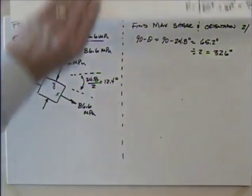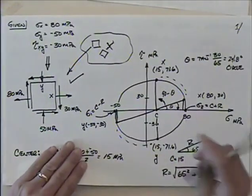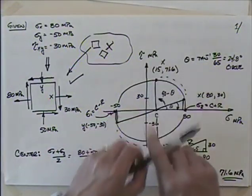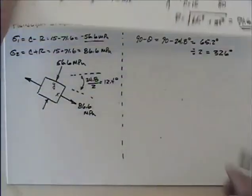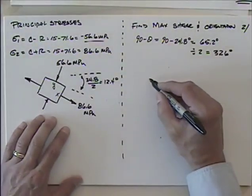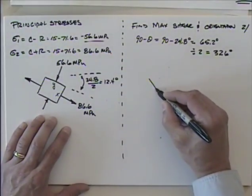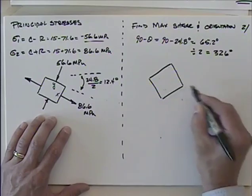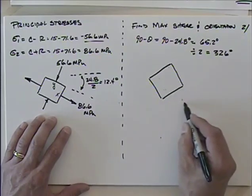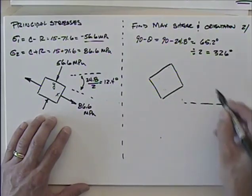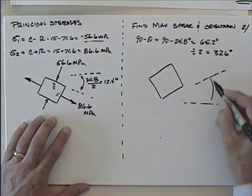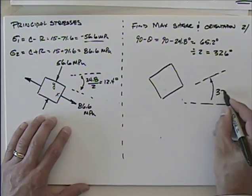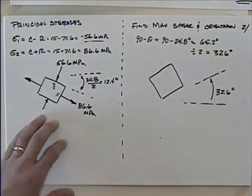To get there, this angle is going to be 90 minus theta. So 90 minus 24.8 degrees gives me 65.2 degrees. Dividing by 2 gives me 32.6 degrees. Here I've rotated counterclockwise on the circle, so I'm going to rotate the element counterclockwise 32.6 degrees.